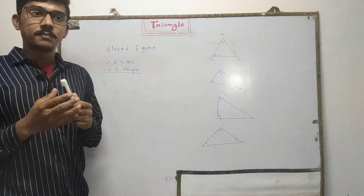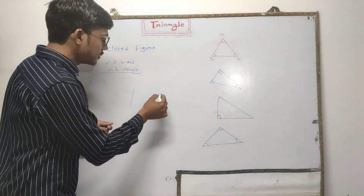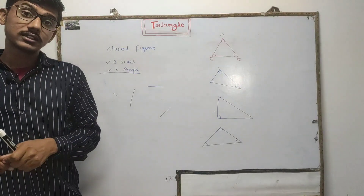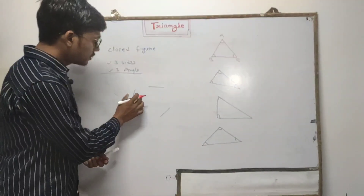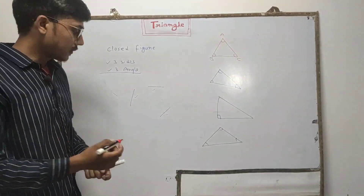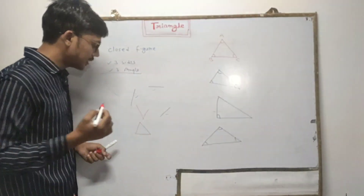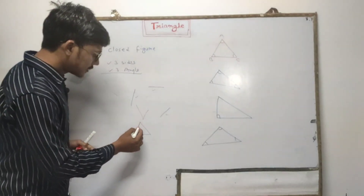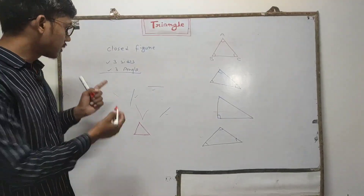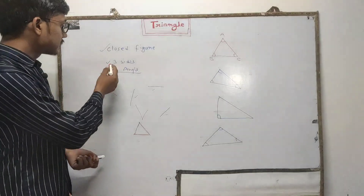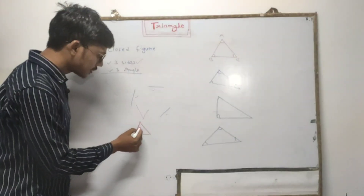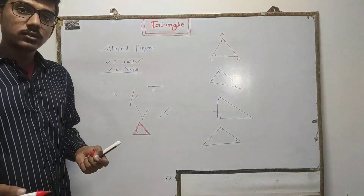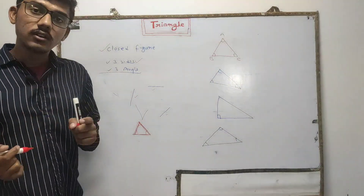Suppose we have three sides: one side, two sides, and three sides. If we want to combine them and make a shape, using these three sides I have to make a shape. So you can see there are three sides in this shape — it is a closed figure. And there are three angles also: one, two, three. So you can say this figure is called a triangle.